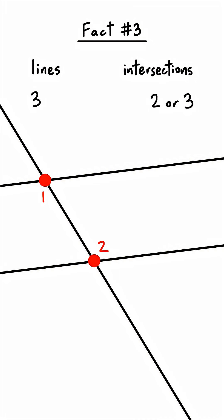Third fact, draw three lines then count every intersection point, even if they're really far away. The maximum is three intersections, but notice that every number less than three is also possible.